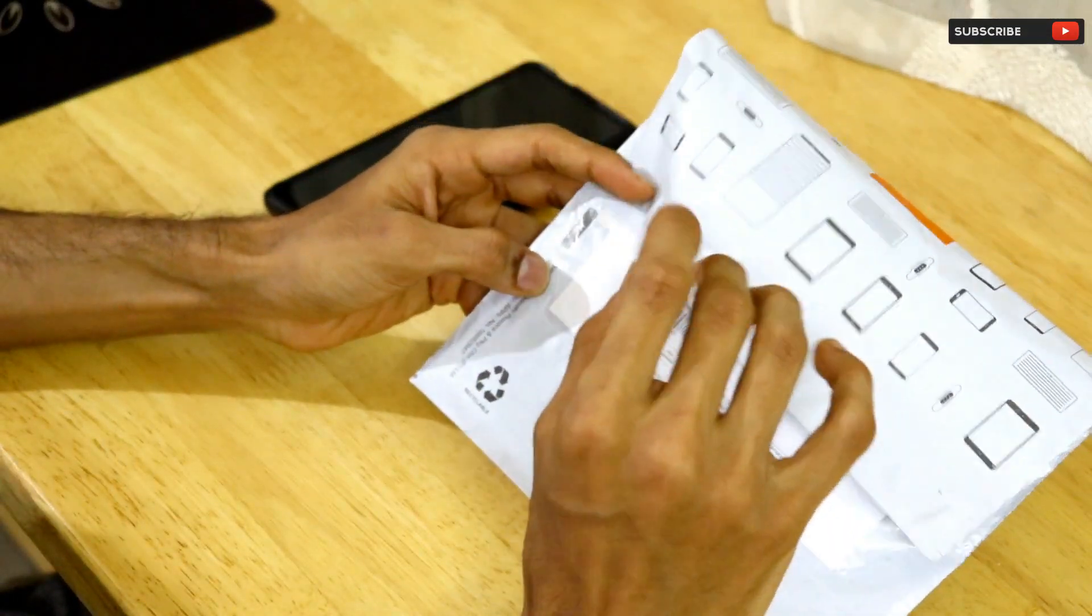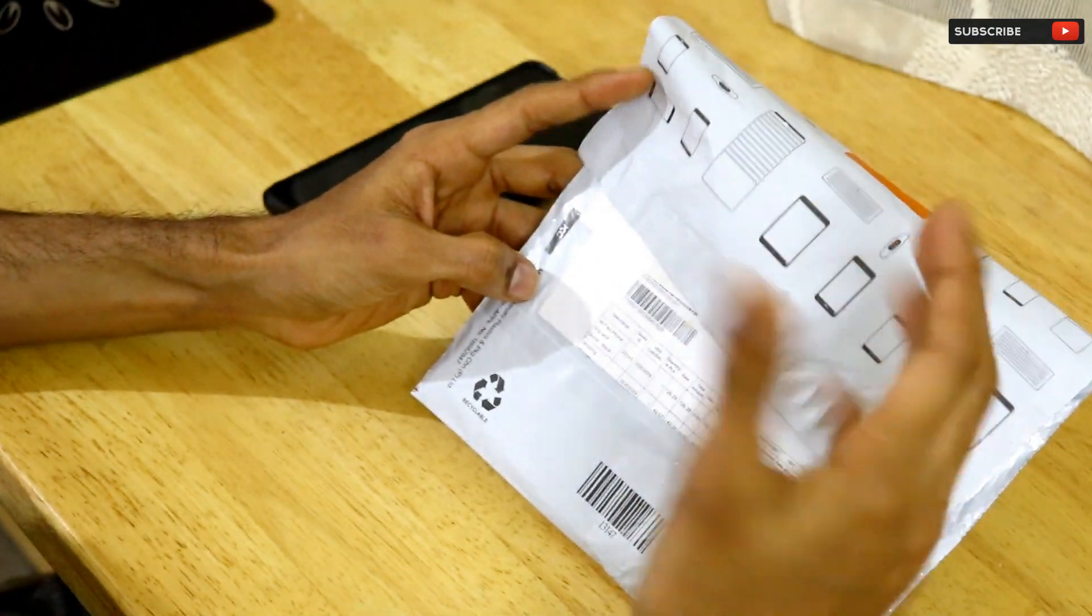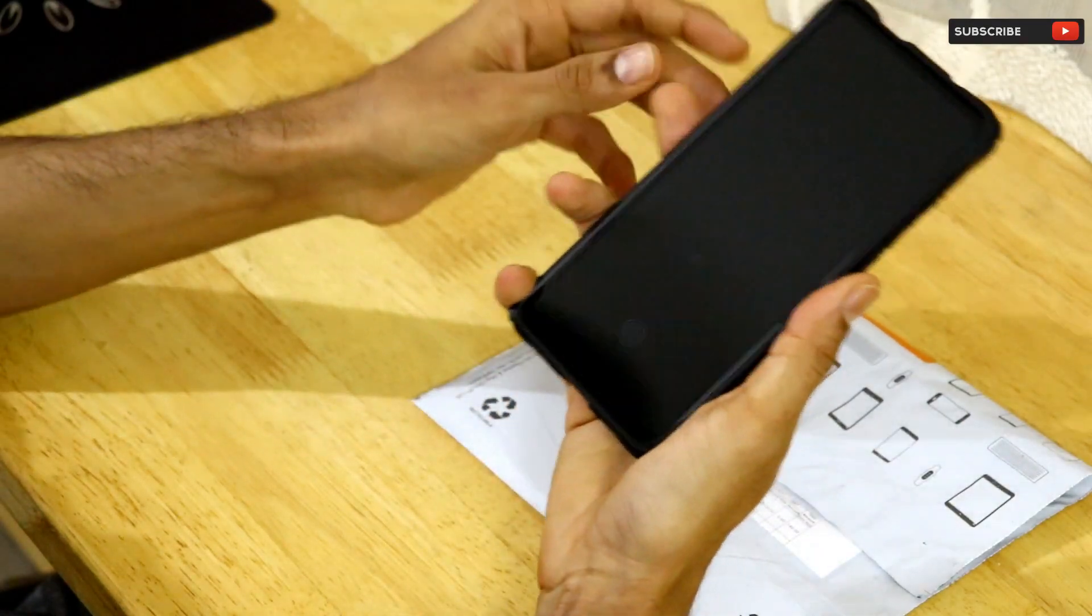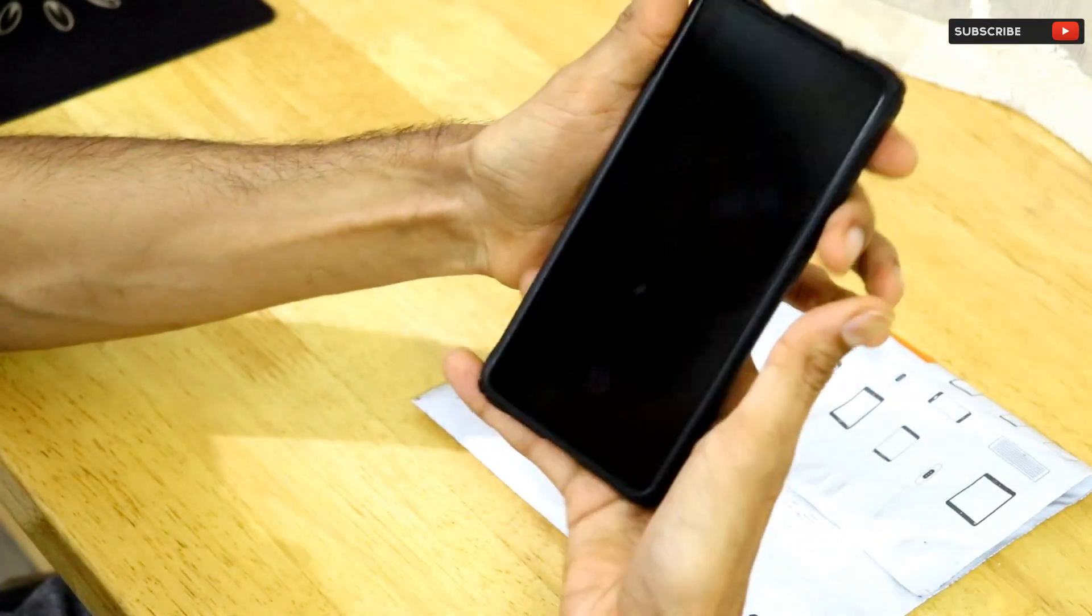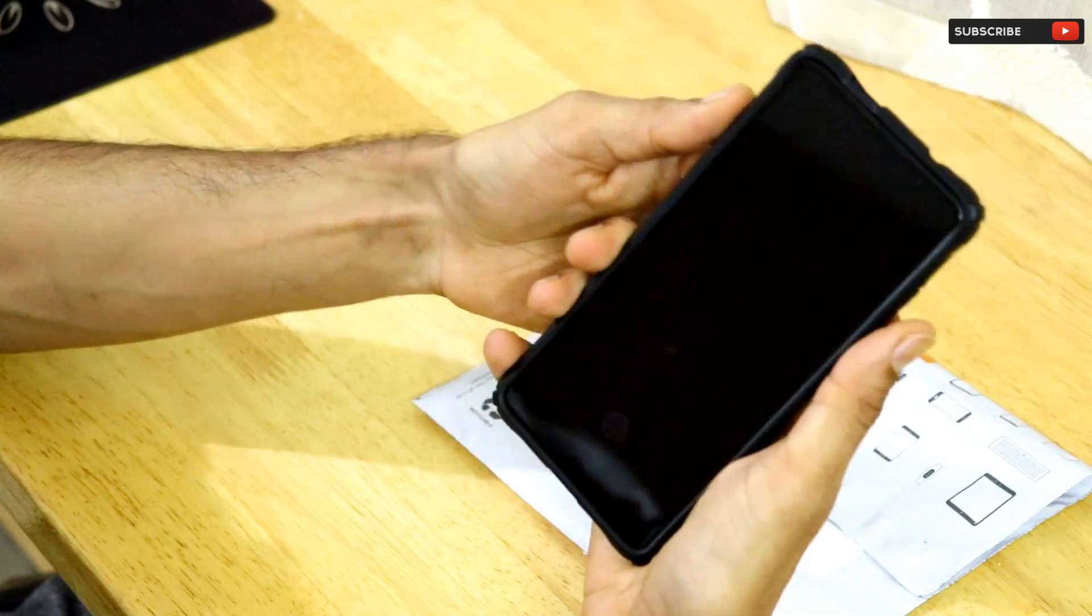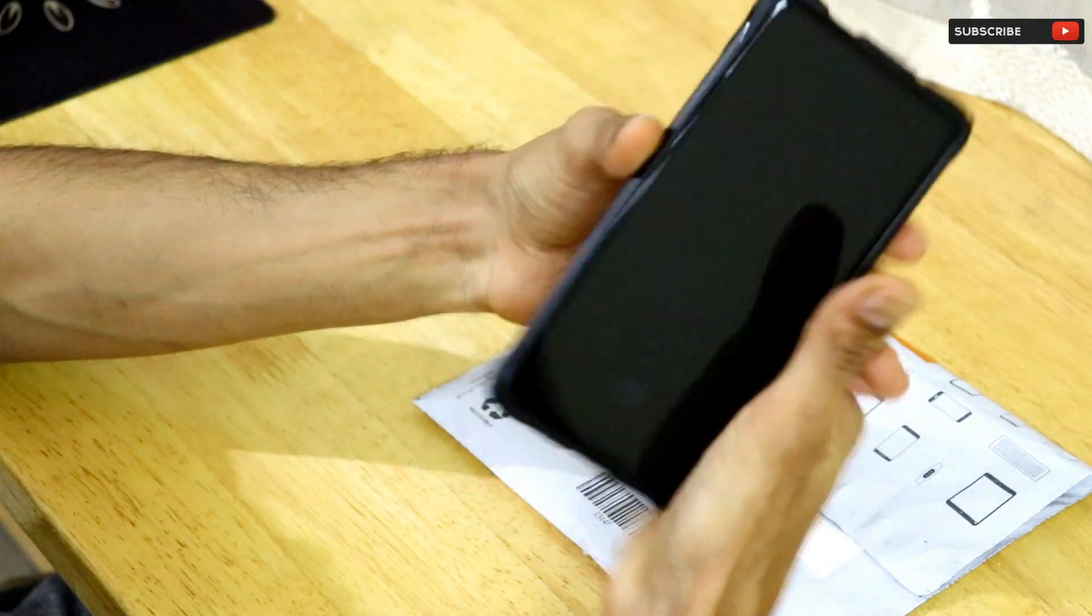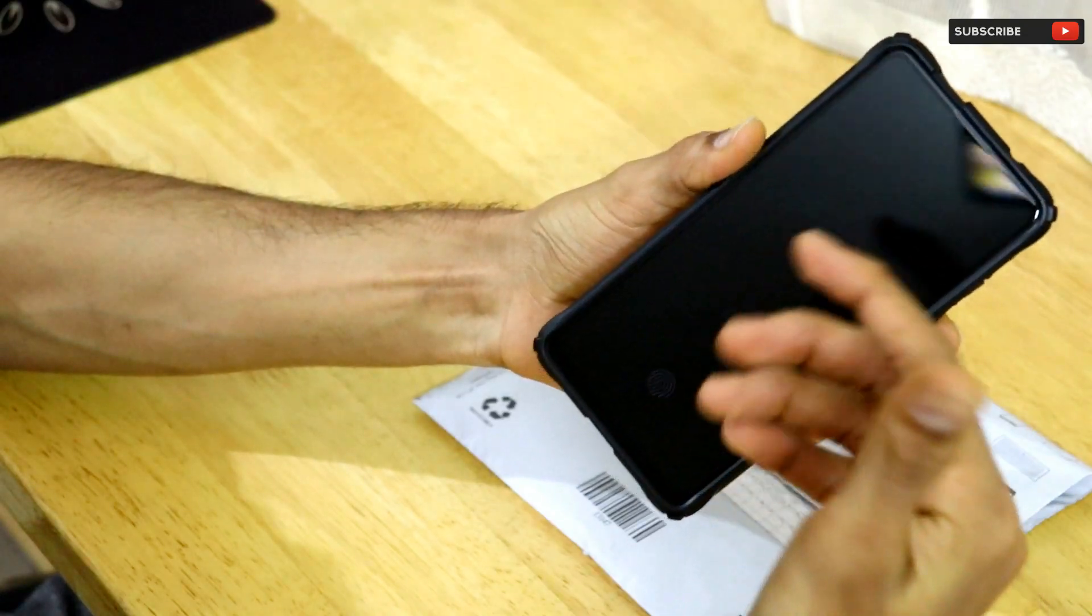This product is none other than the Mi Flex Grip. The Mi Flex Grip is a phone grip that's been made for smartphones with very large displays. Because of the large display, you won't be able to handle the smartphone in one hand easily.